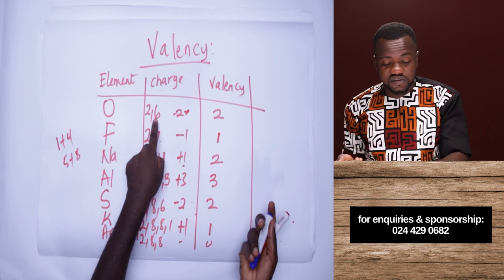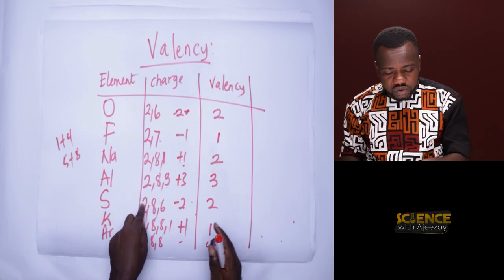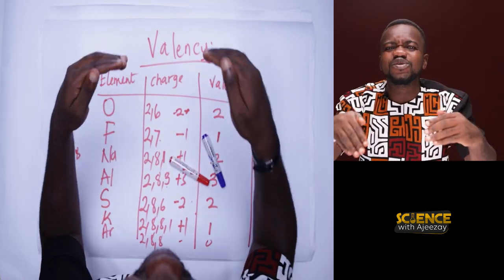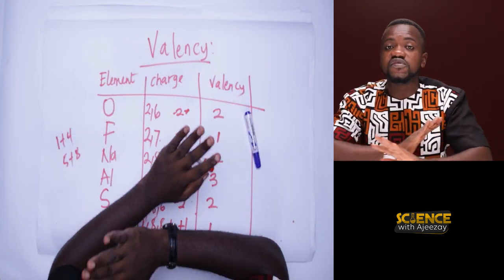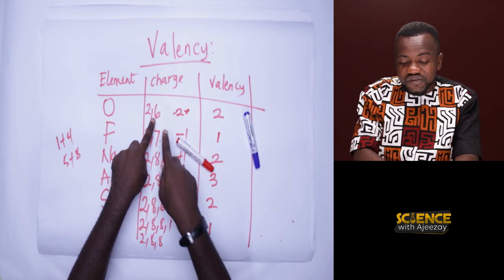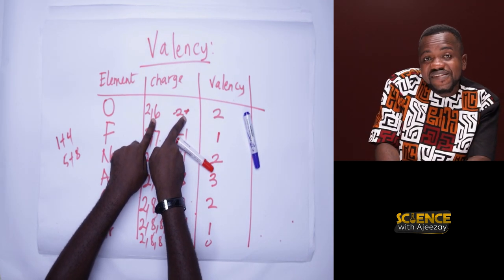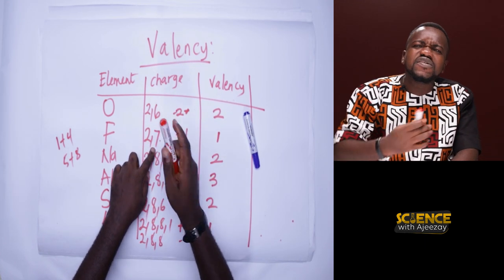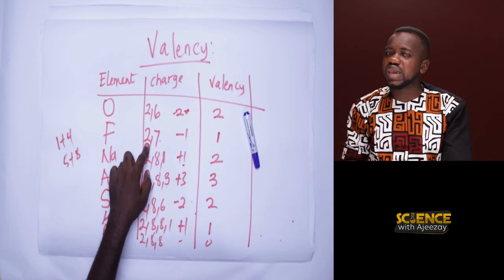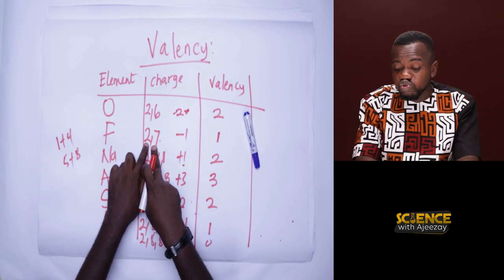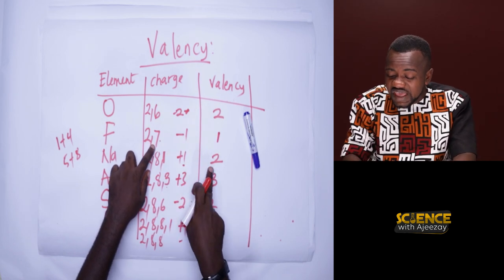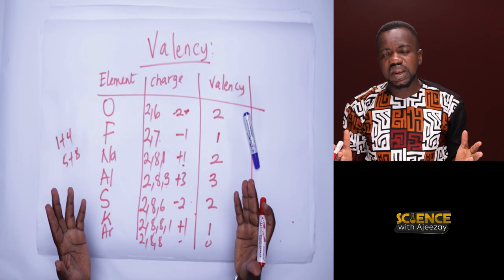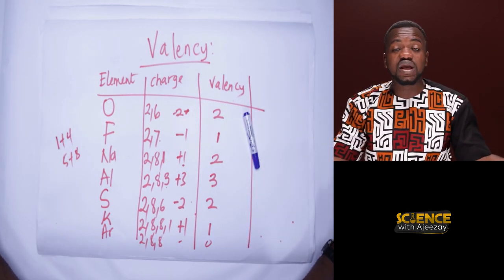For example: configuration 2, 6 — not stable. Configuration 2, 7 — not stable. Configuration 2, 8, 1 — not stable. Configuration 2, 8, 3 — not stable. Configuration 2, 8, 6 — not stable. Once you know it is not stable, you ask what needs to happen for it to be stable. For 2, 6 — it's not stable because the outer shell should be eight, so it needs two more electrons, giving it a charge of minus two and a valency of two.